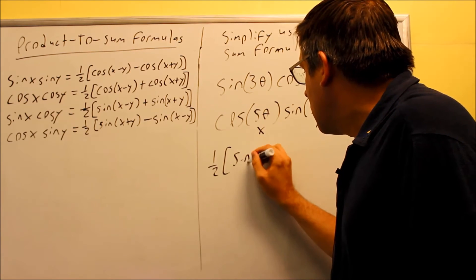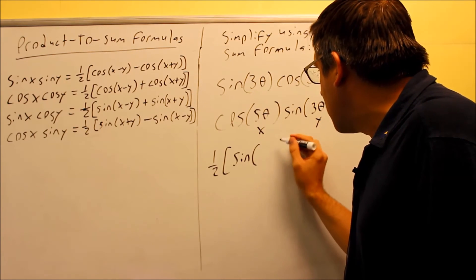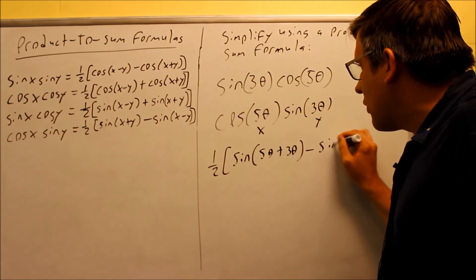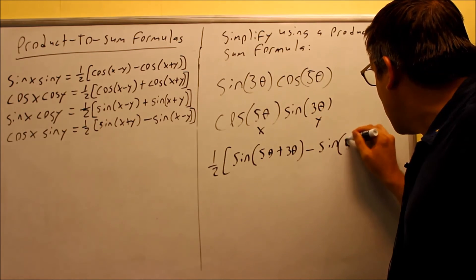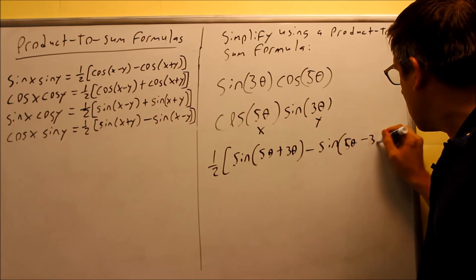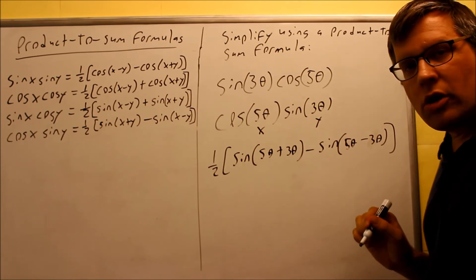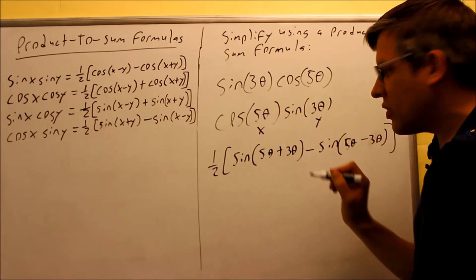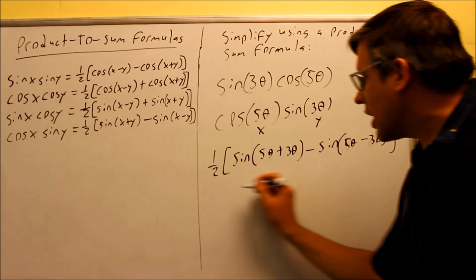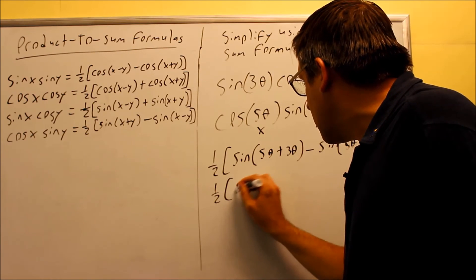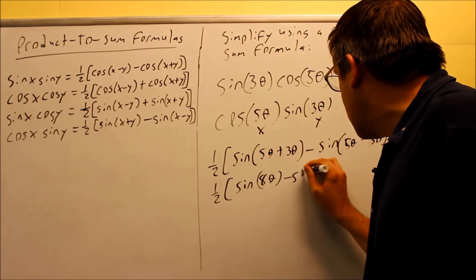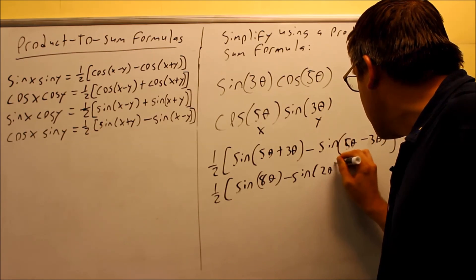I have sine of x plus y, 5 theta plus 3 theta. And then I have sine 5 theta minus 3 theta. Again, the idea here is we're making the x always a larger one because now when I subtract these, we notice that we don't have any negative angles happening. So, this is going to be sine of 8 theta and then sine of 2 theta.